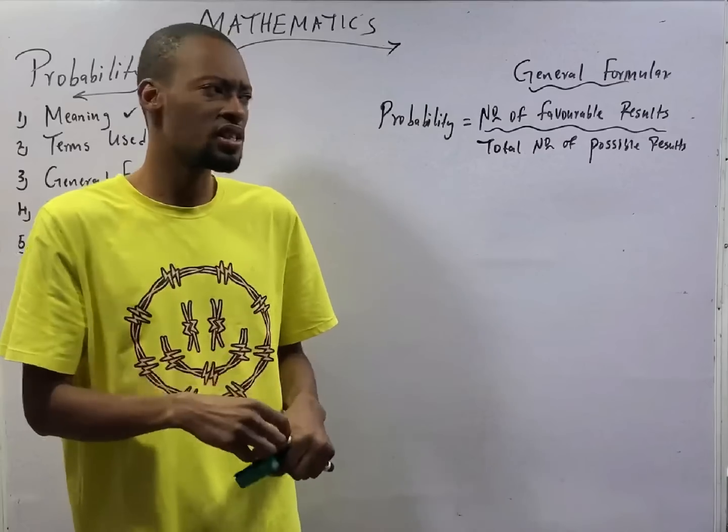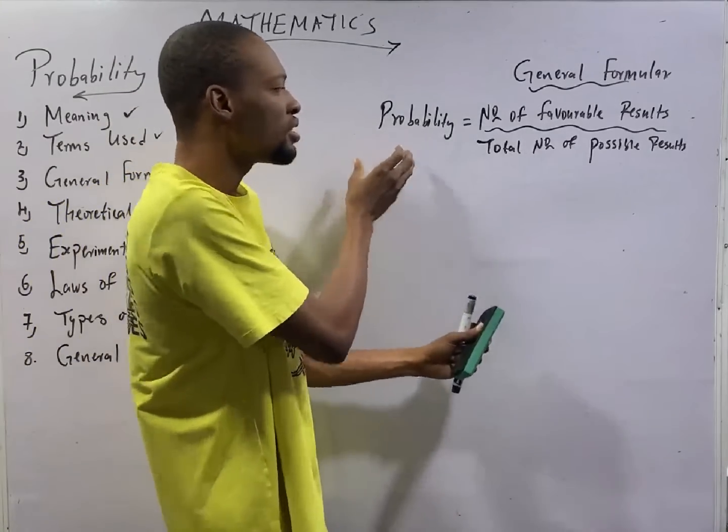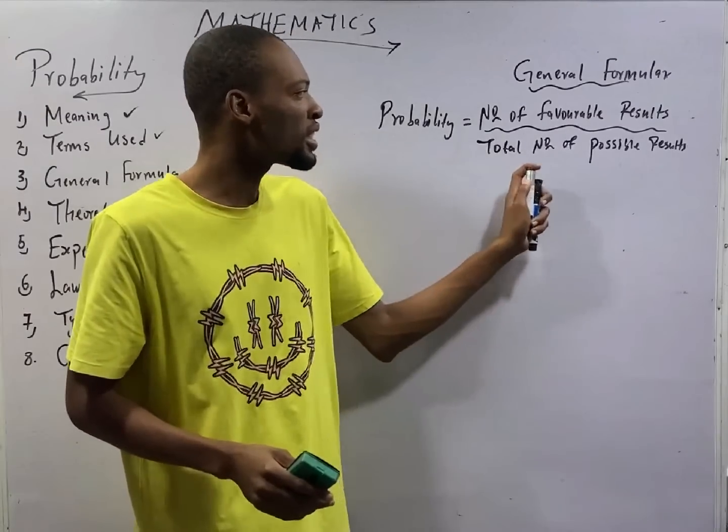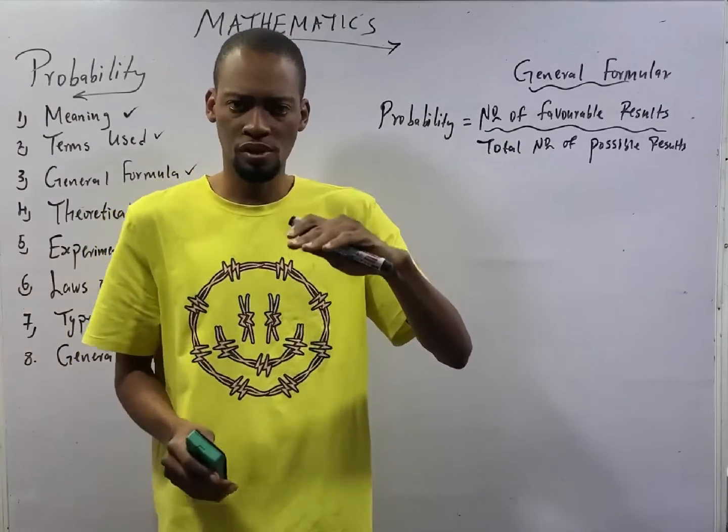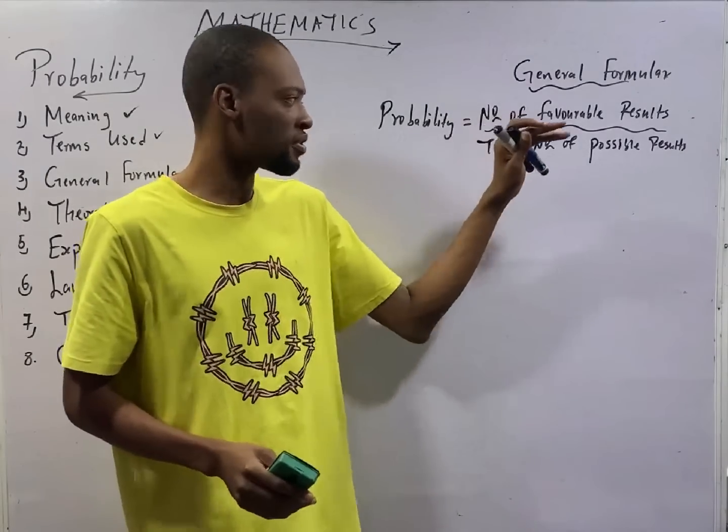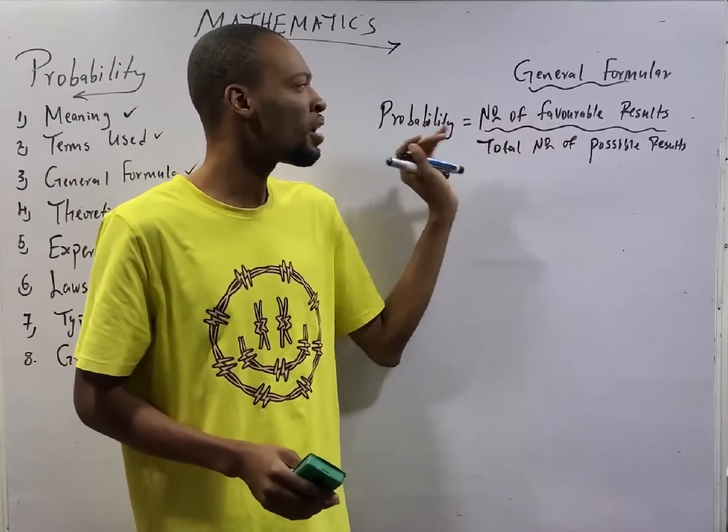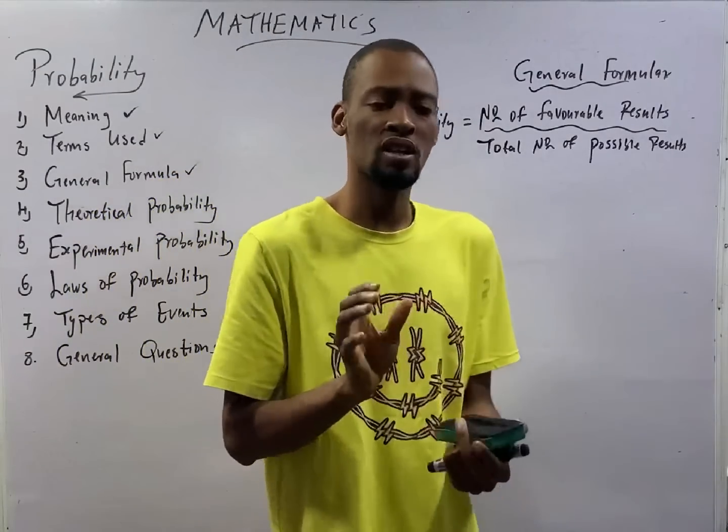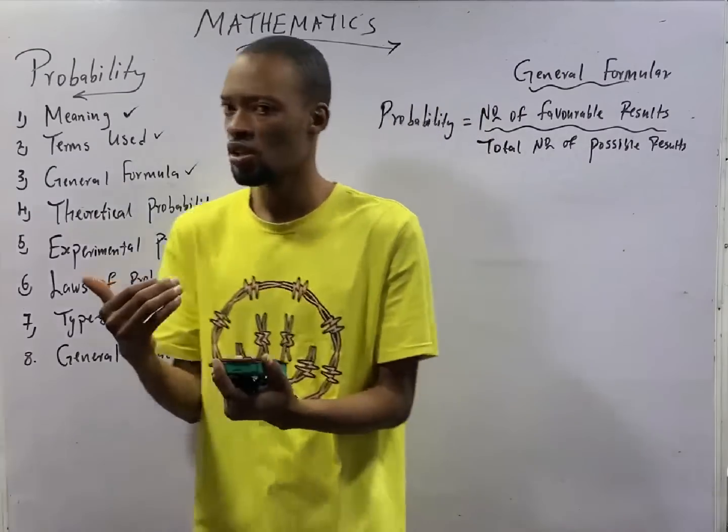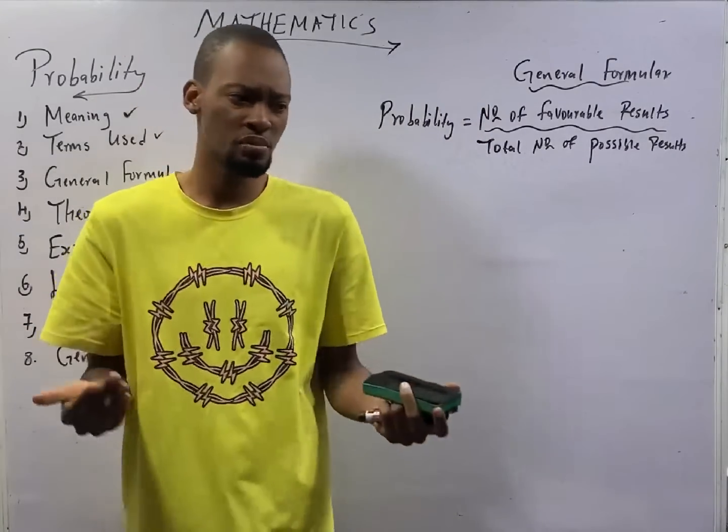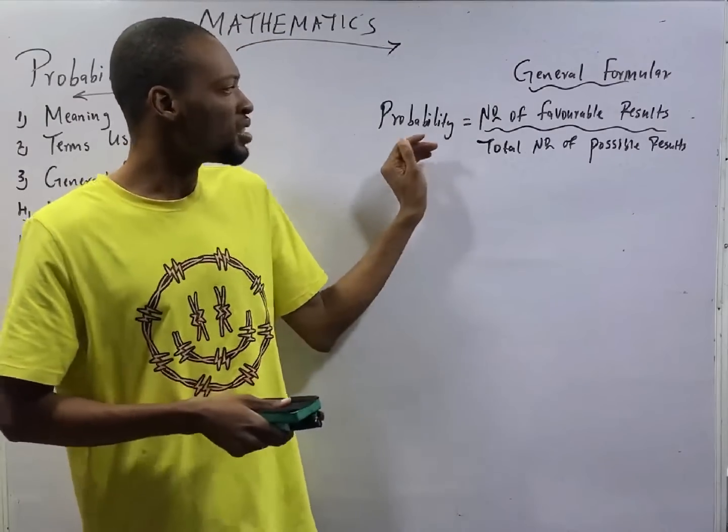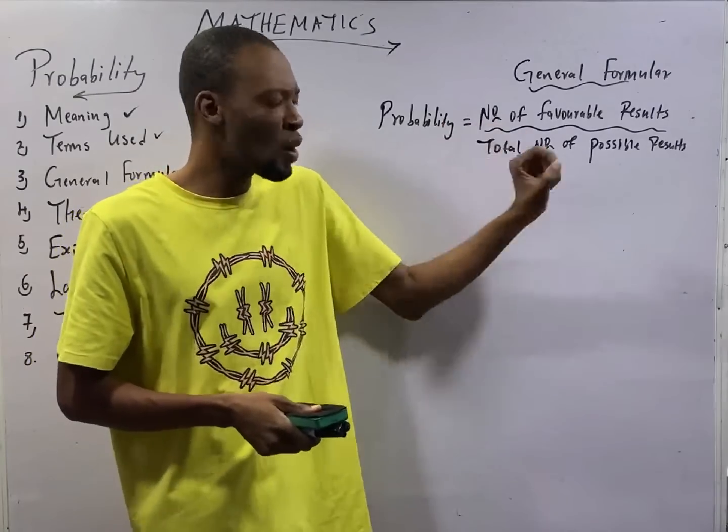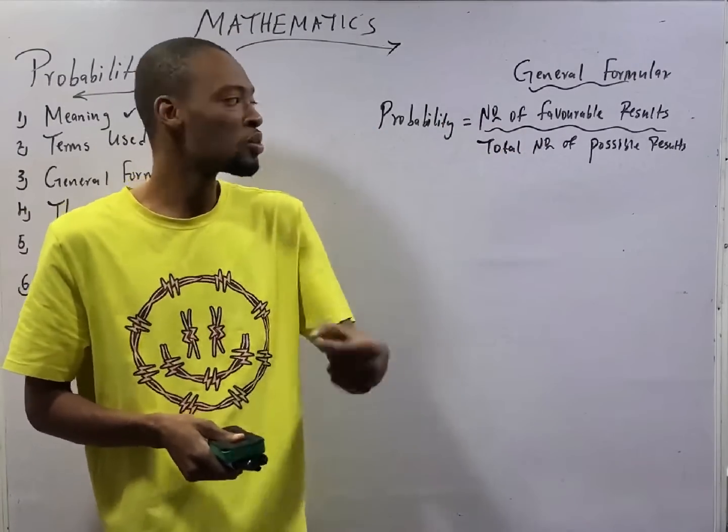Let us see the general formula for probability. The general formula is simple. Probability is equals number of favorable results over total number of possible results. You can interpret this general formula to your favor all the way you will understand. This is the meaning. The probability of something happening is the number of what you want to happen or what you want to happen.